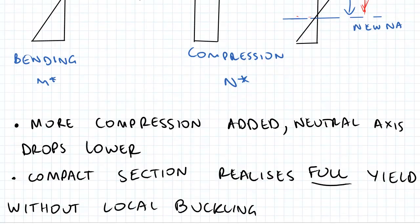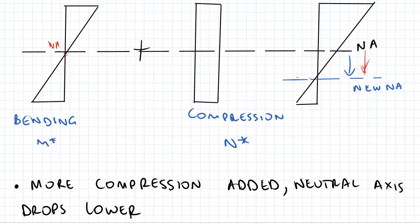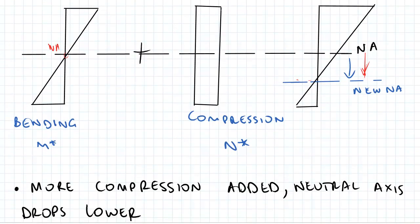One thing I want to touch back on that we've covered in the previous beams topic was compact sections. Basically, compact sections realize full yield without buckling, and given this setup we can get that full yielding happening.